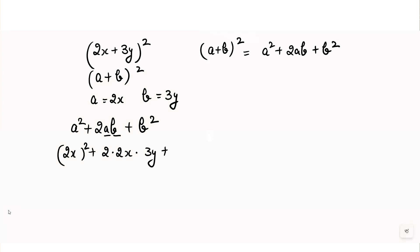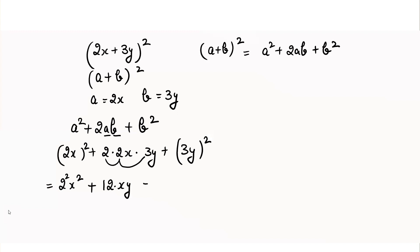So we get (2x) whole square plus 2 times 2x times 3y plus (3y) whole square. Now (2x)² means the square of 2 and the square of x, giving 4x². Then 2 into 2 into 3 equals 12, so we get 12xy. And (3y)² gives 9y². So the final answer is 4x² + 12xy + 9y².